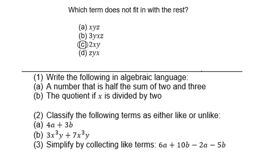Which term does not fit in with the rest? xyz, 3xyz, 2xy, and zyx. It will be c, because the other three - a, b, and d - all have an x, a y, and a z. So that makes them like terms. And c is the only one without a z. So therefore, c is unlike.